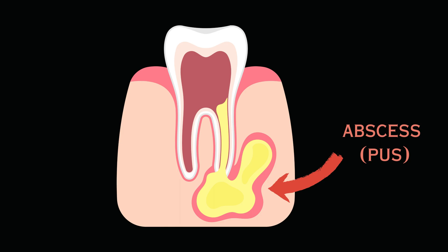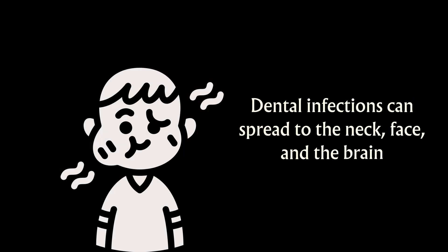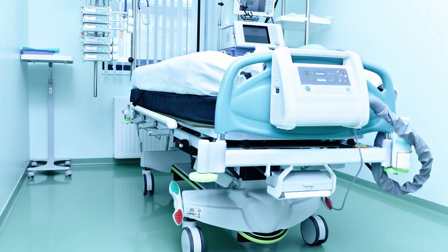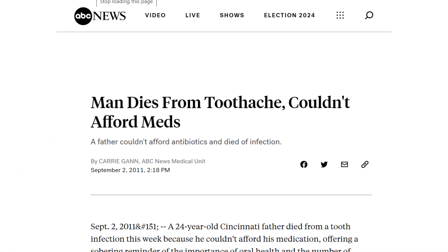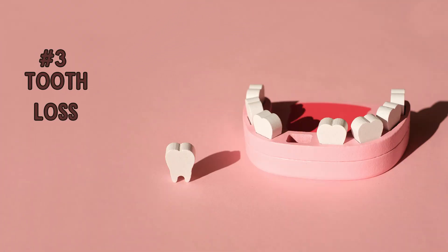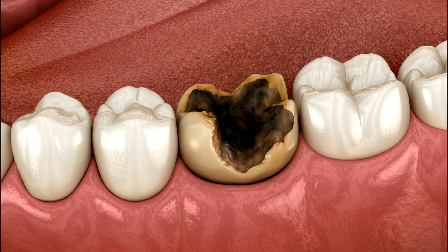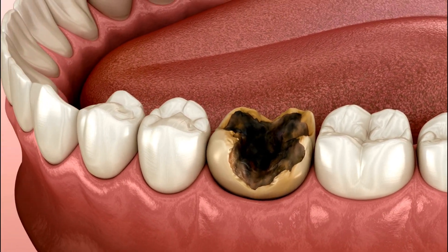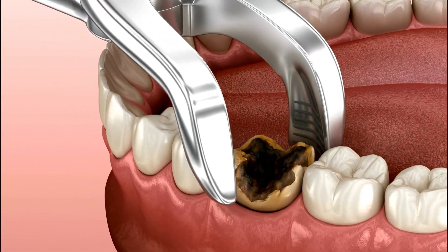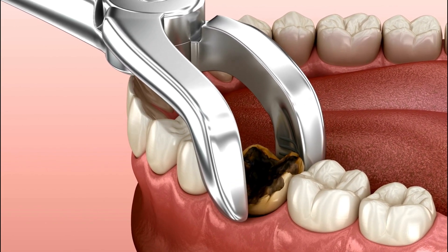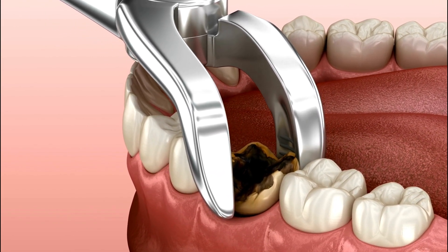Infections arising from the teeth can also spread to the neck, the face, and even the brain, resulting in serious health complications, including death. Number three is tooth loss. Cavities can weaken the structure of the tooth, making it more prone to further decay. If a tooth becomes too damaged or infected, it may need to be extracted.